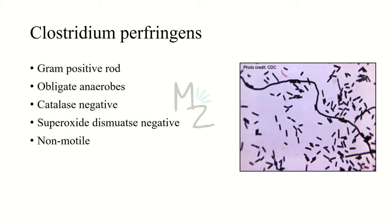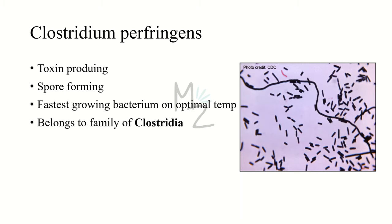Clostridium perfringens is a gram positive rod. It is obligate anaerobic, and it is catalase and superoxide dismutase negative. It is non-motile because this bacterium has no motility apparatus like a flagella. As seen in this picture, this bacterium is rod-shaped — kind of rectangular shaped. This bacterium produces many toxins like alpha, entero, beta, epsilon, and iota, and it is also responsible for forming spores.